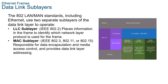How about data link layer sublayers? The IEEE 802 LAN/MAN protocols, including Ethernet, use the following two separate sublayers of the data link layer to operate: the LLC sublayer and the MAC sublayer — logical link control or LLC, and media access control or MAC. Recall that LLC and MAC have the following roles in the data link layer.